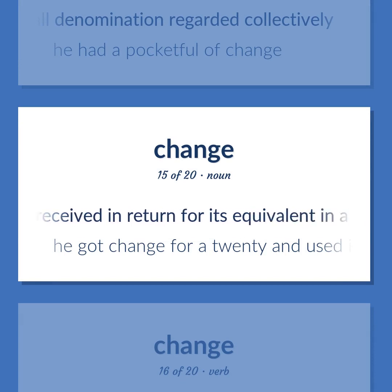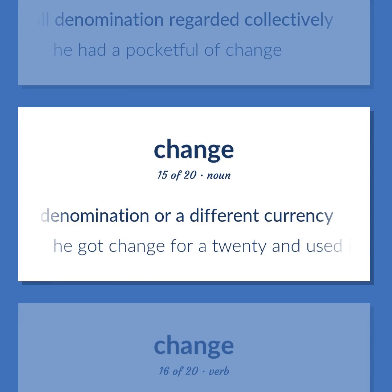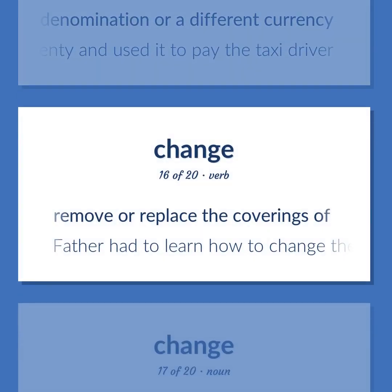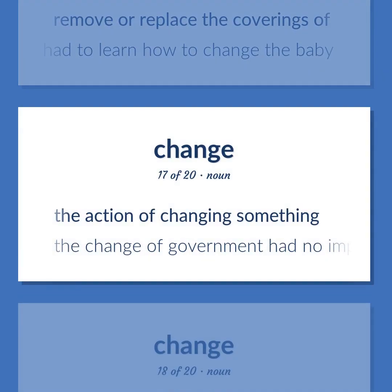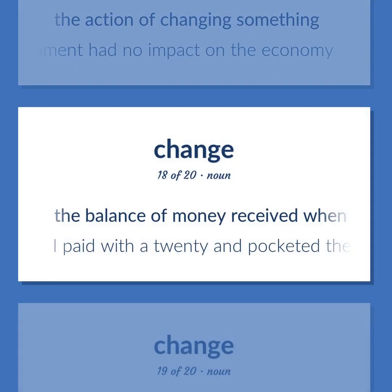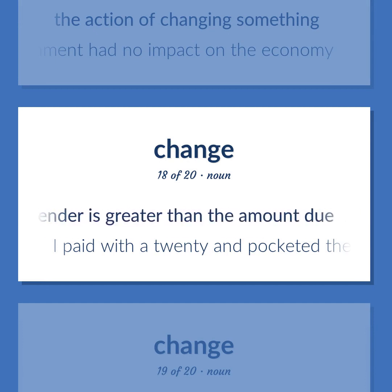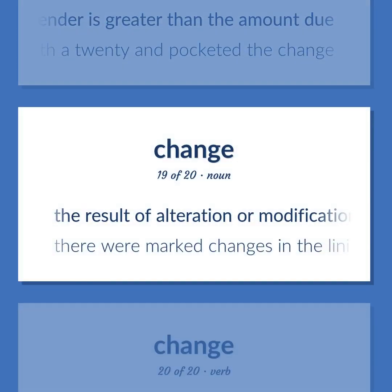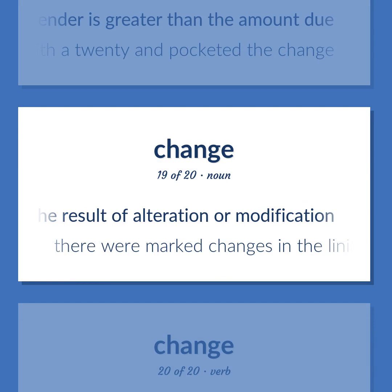Change: money received in return for its equivalent in a larger denomination or a different currency — he got change for a $20 and used it to pay the taxi driver. Remove or replace the coverings of — father had to learn how to change the baby. The action of changing something — the change of government had no impact on the economy. The balance of money received when the amount you tender is greater than the amount due — I paid with a $20 and pocketed the change. The result of alteration or modification — there were marked changes in the lining of the lungs.